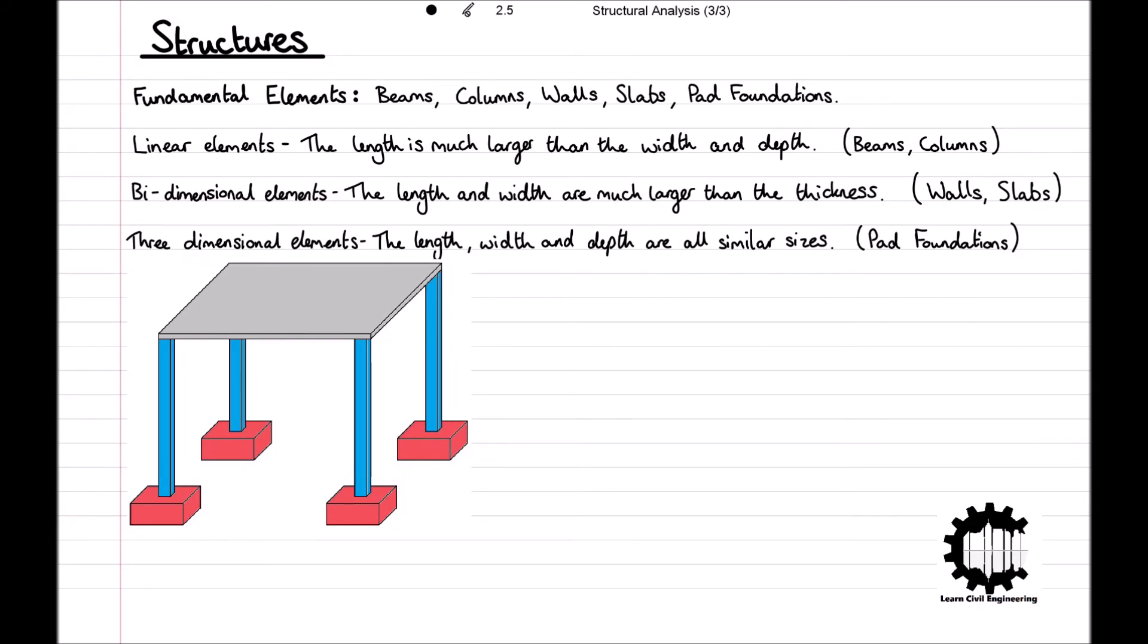The diagram illustrates a structure including all three classifications of elements: the blue columns are linear, the gray slab is bidimensional, and the red foundations are three dimensional.